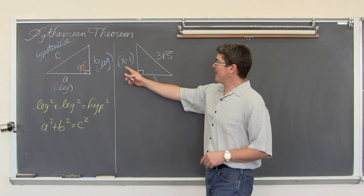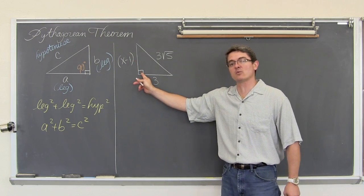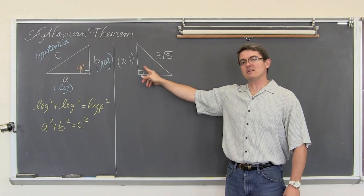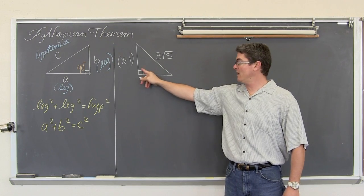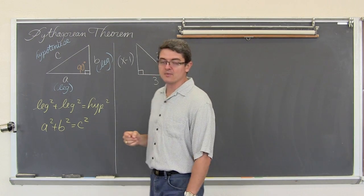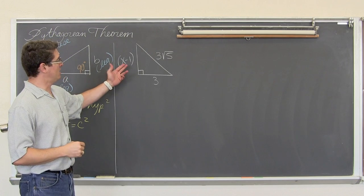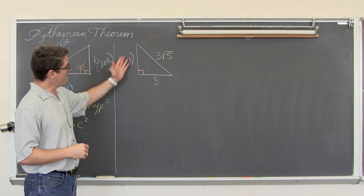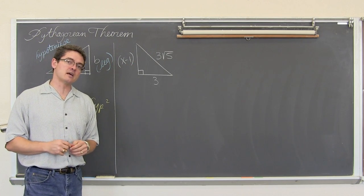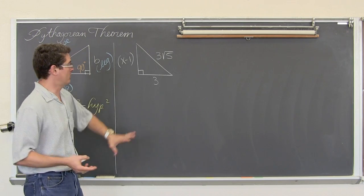Here we have x-1 as a leg helping to make one of the right angles. We have 3 again helping to make this 90 degree right angle, and a hypotenuse of 3 square root of 5. If we are going to find the value of x and the length of the side of this right triangle, we have to set up the Pythagorean Theorem.